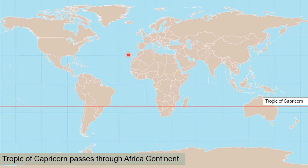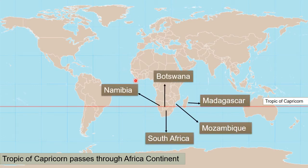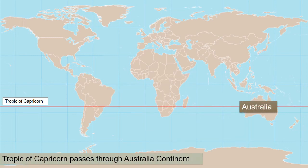Now talking about the Africa continent — there are five countries. First is Namibia, second is Botswana, third is Madagascar, fourth is Mozambique, and the last one is South Africa.